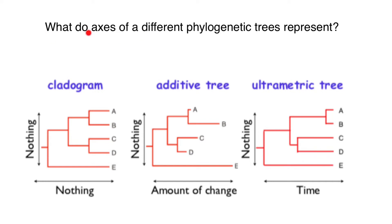What do the axes of different phylogenetic trees represent? In a cladogram, there is nothing on the y-axis and nothing on the x-axis. From a cladogram, we can only see the relationship between different species. For example, we can say that species A and B are more closely related than species C and B.